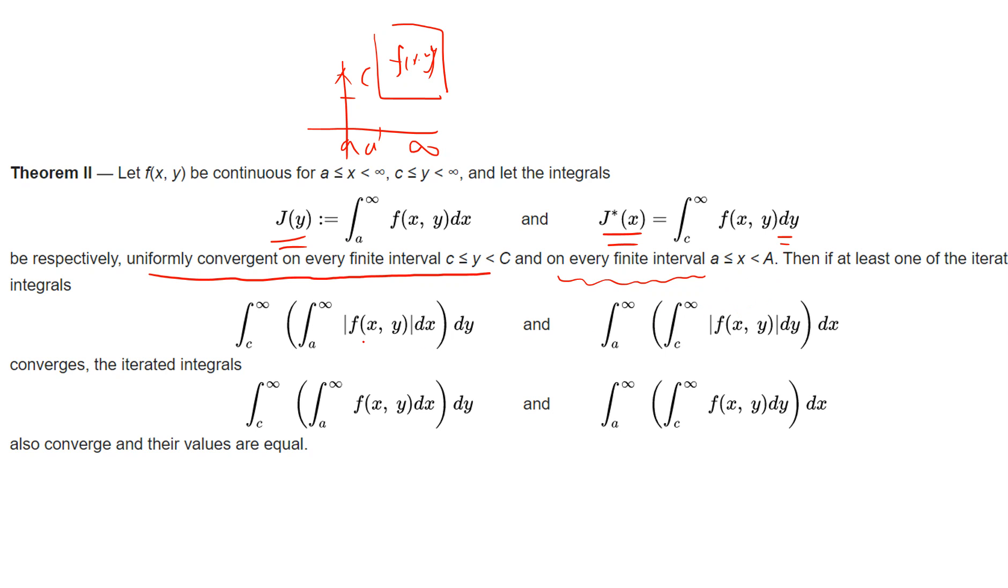The main message is that if there is uniform convergence and also absolute convergence, and at least one of them is convergent, then the iterated integrals converge and the values will be equal.